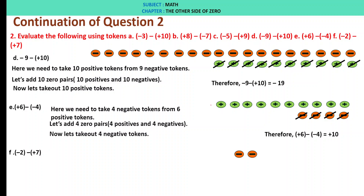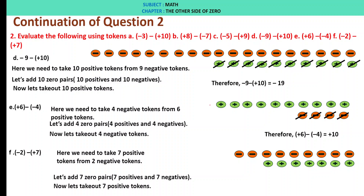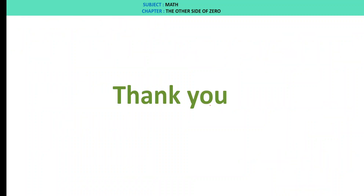F: minus 2 minus of plus 7. Minus 2 tokens are there. We need to take 7 positive tokens from 2 negative tokens. So let us add 7 zero pairs. After adding, we take out 7 positive tokens. We are left with 9 negative tokens. Therefore, minus 2 minus of plus 7 is minus 9. Thank you.